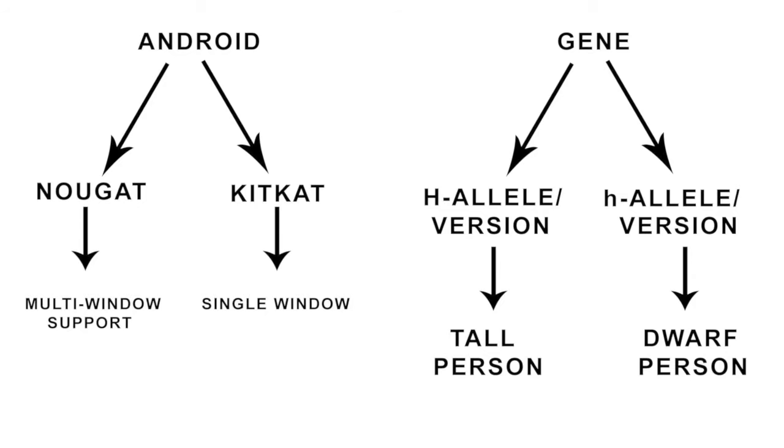It has got two forms or two alleles. One is uppercase H allele and another is lowercase h allele. And these two have different functions. The uppercase H allele functions as a tall person, that means it gives a phenotype of a tall person.